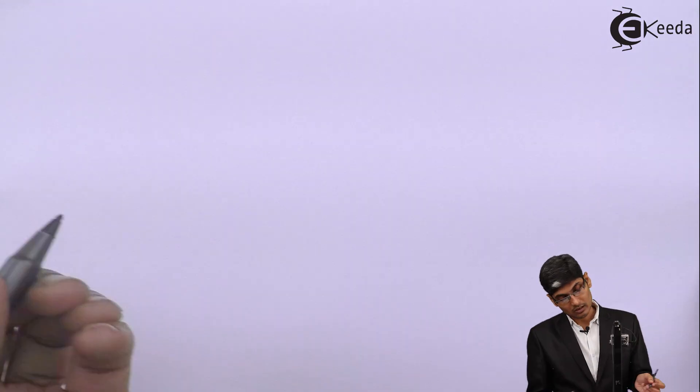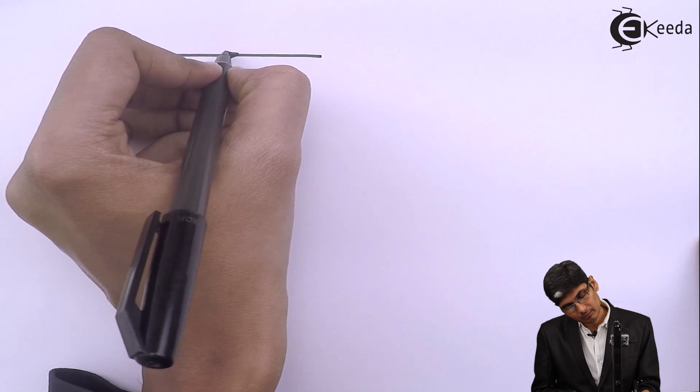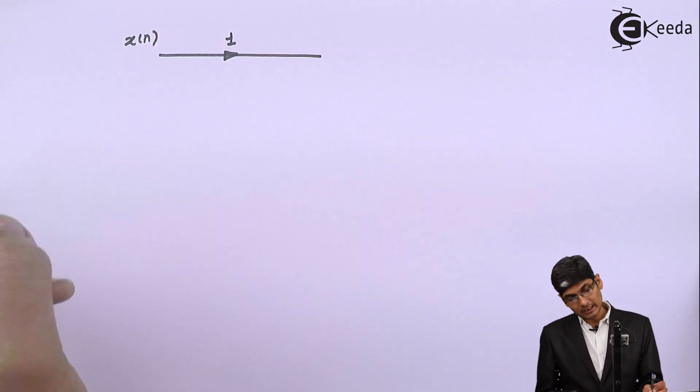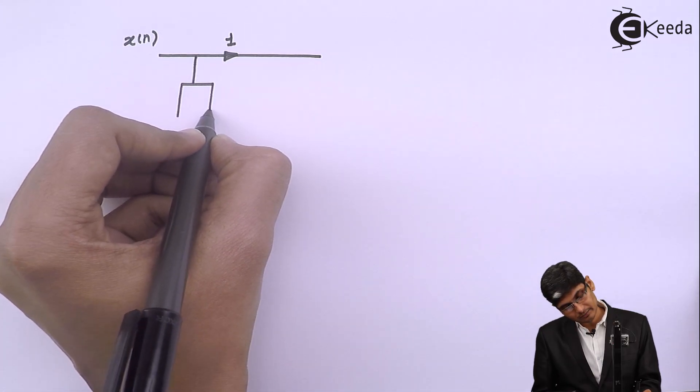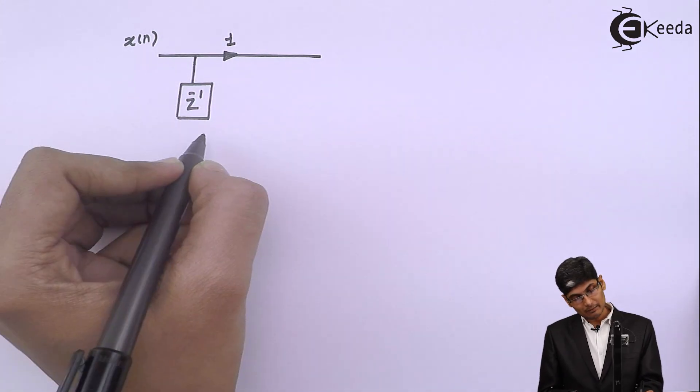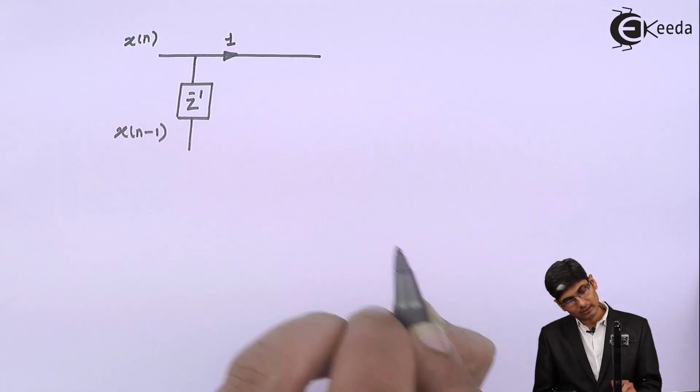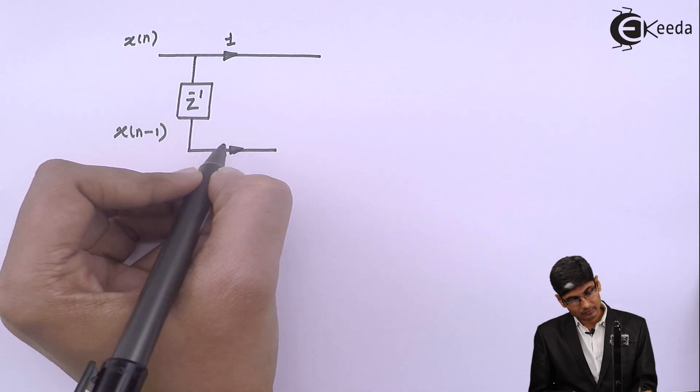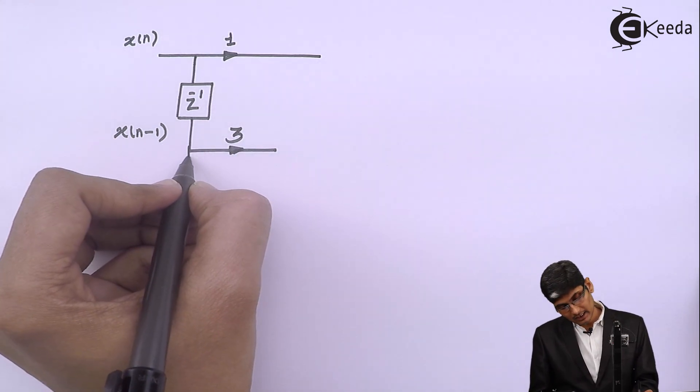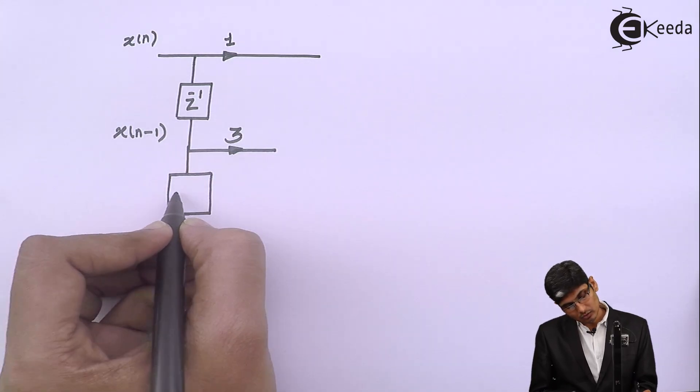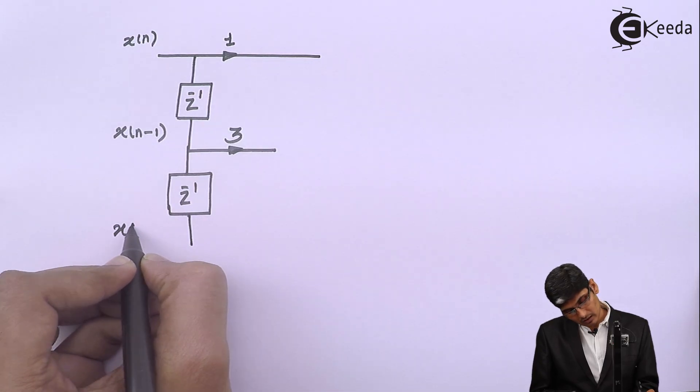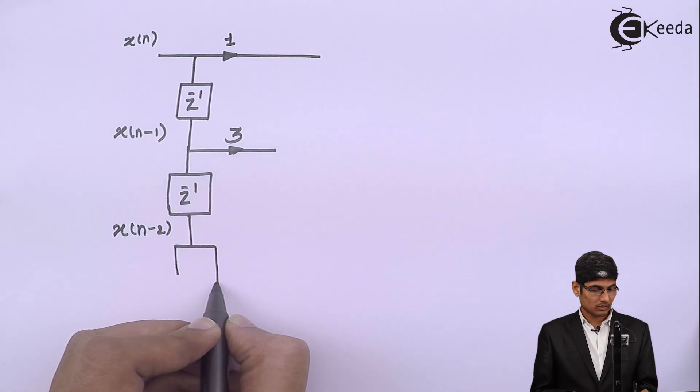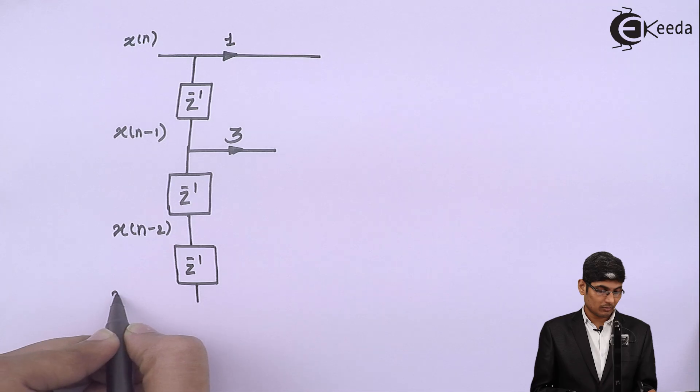To realize the structure, I will consider first input as my X of N and along with X of N, the coefficient is 1. So that really does not matter. Then I have to delay X of N by 1 unit. So I will delay it by 1 unit and I am going to get your output as X of N minus 1. Now, along with N minus 1, the multiplier factor that I have is 3. So I have 3. Then I have to delay thrice. So this block will give me N minus 2 and there is no Z raised to minus 2 term. So don't have to get this out. So I will just put another delay block and this will be X of N minus 3.